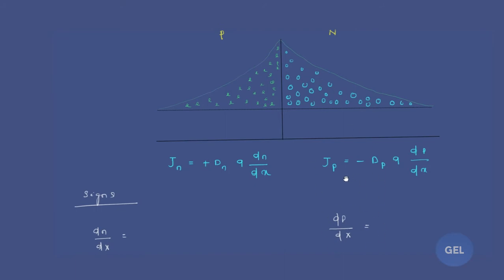What will be the current due to hole current — what is the direction of IH? Look here carefully: dp/dx — hole concentration p goes from high to low. So high to low: during high, the distance x is 0; during low, the length value is x.